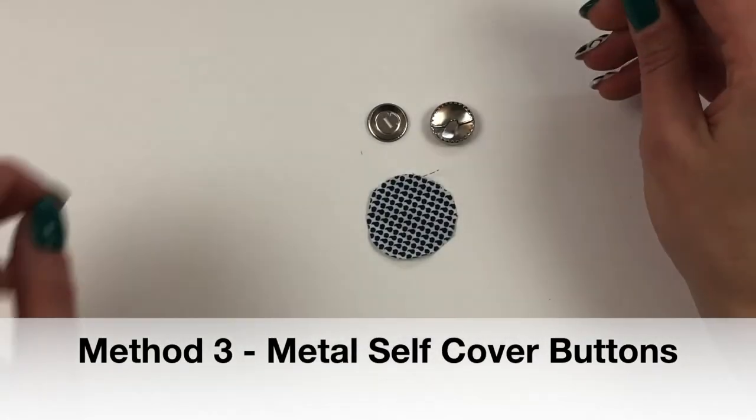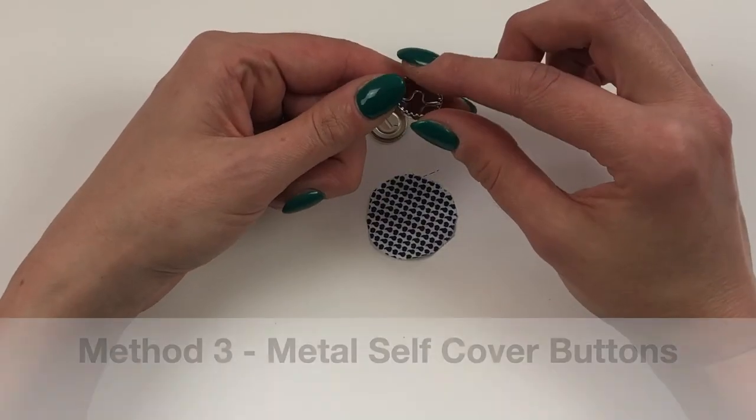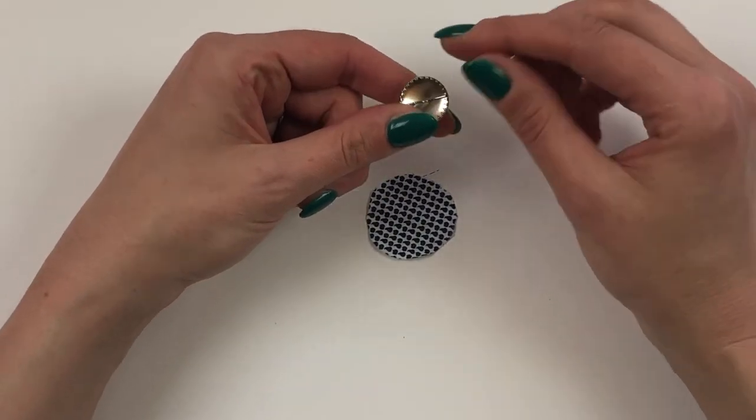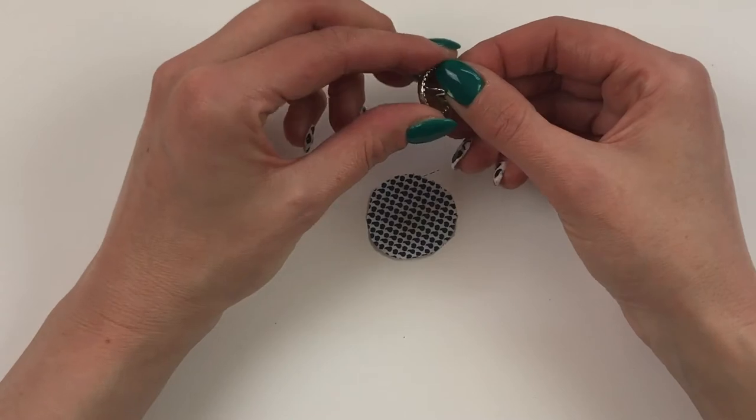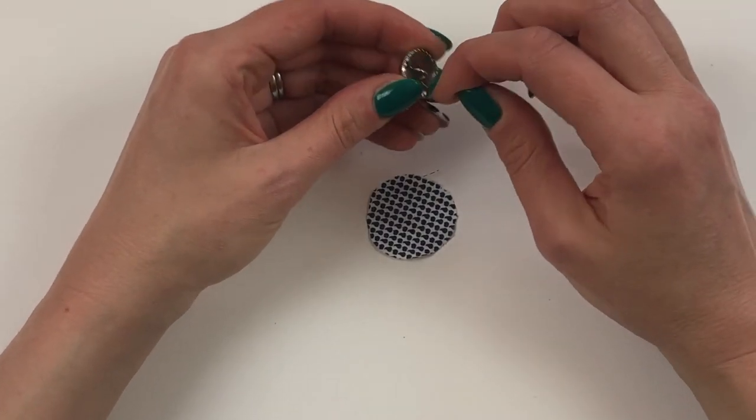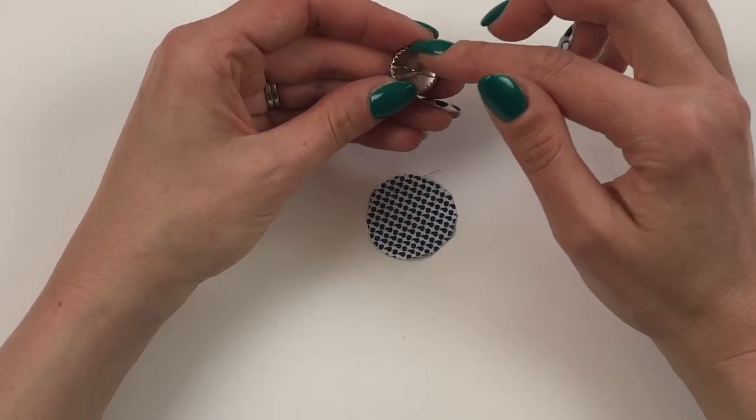Let's look now at the metal covered buttons. These can be much easier to cover without the cover button tool because they've got these sharp little edges around the inside which grab your fabric.